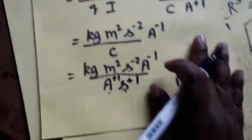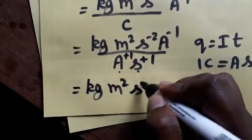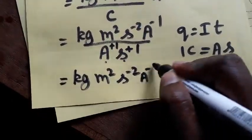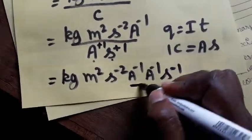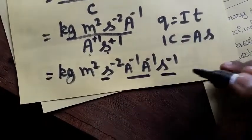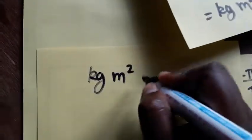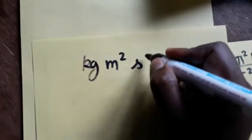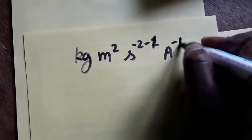So kg, meter square, second minus 2, ampere inverse, ampere again inverse, second inverse. Ampere inverse, ampere inverse equals ampere minus 2. Second minus 2, second minus 1 equals second minus 3. So we are going to get kg, meter square, second minus 3, ampere minus 2.